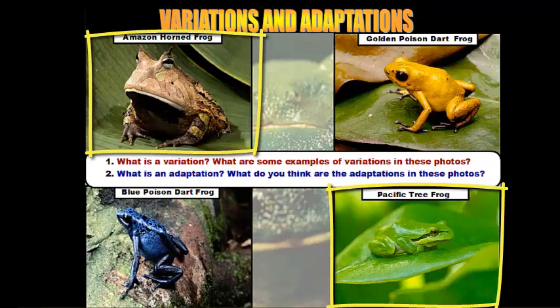One, not get eaten — that helps the organism survive. Two, it also camouflages them from prey. If prey can't see them, they're more likely to wander across their path and get eaten. So body color serves as camouflage for the tree frog and the horned frog.